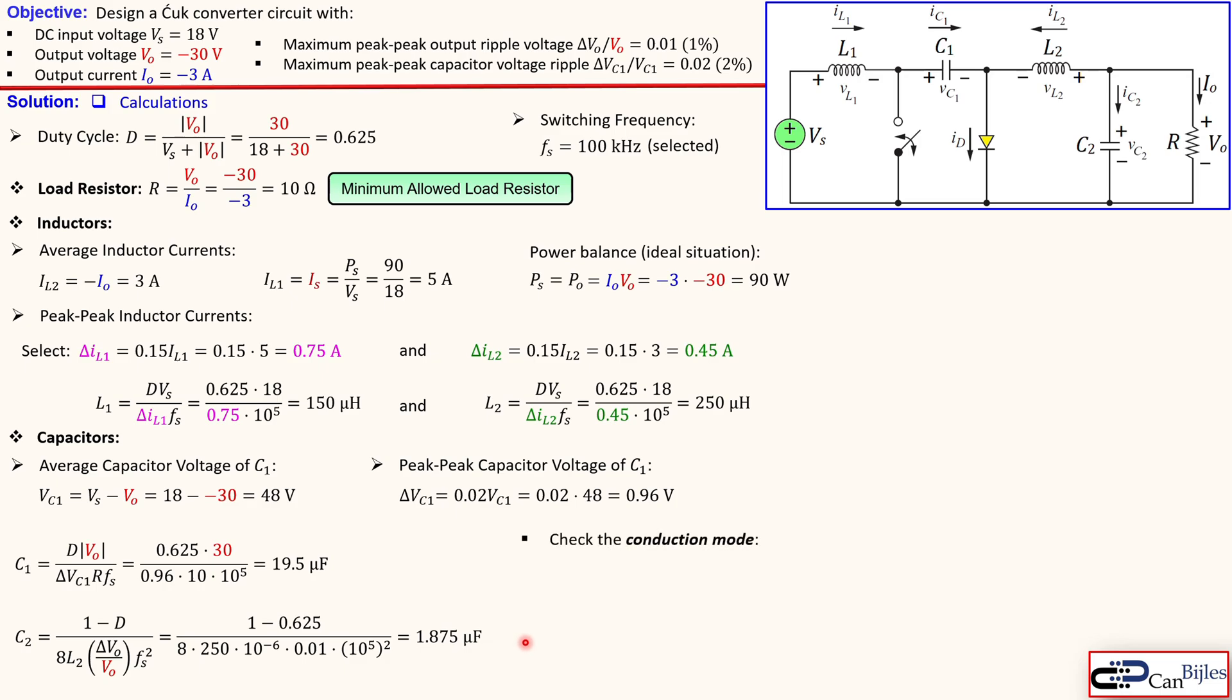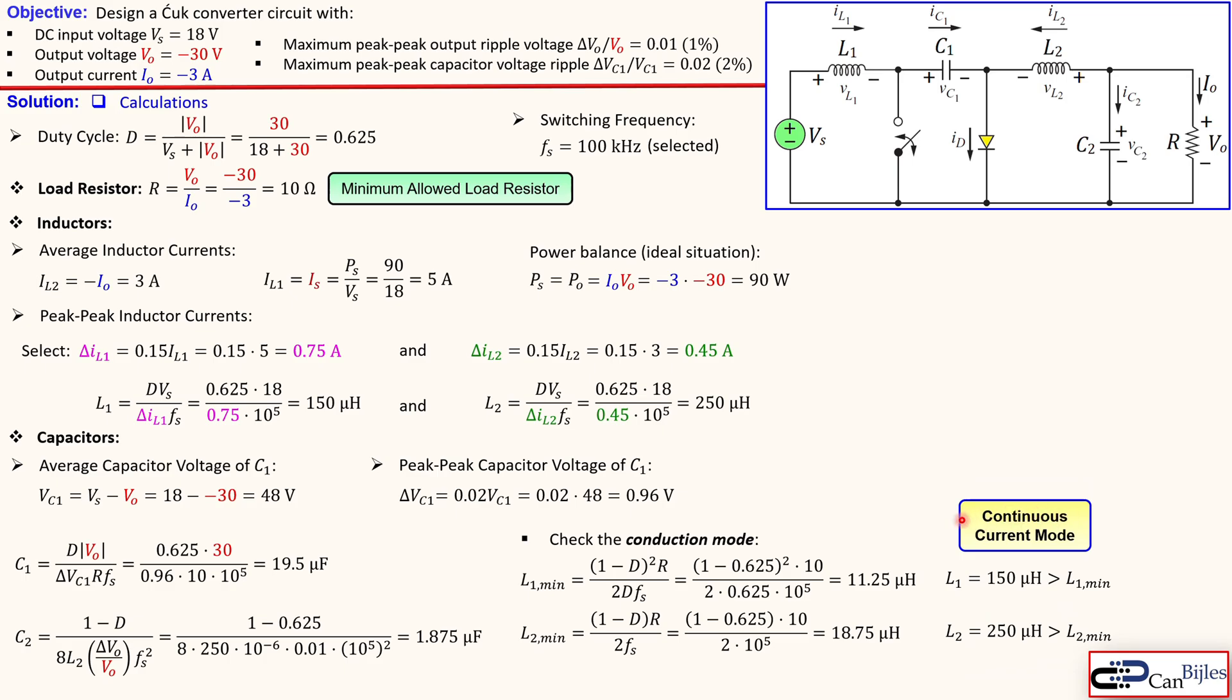Okay, now let's also check the conduction modes because it can be that this system or circuit is operating in the continuous current mode or discontinuous current mode. So for L1, we need to have a minimum value, which is then given by this formula. Now when you substitute here the duty cycle, resistor, and the switching frequency, we get here 11.25 microhenries. Now we have that our L1 is 150 microhenries, so this is definitely larger than that one. So this is fulfilled in order to stay in the continuous current mode. And the L2 minimum is given by this expression for the condition. That will give us, if you substitute the values, 18.75 microhenries. We have L2 as 250 microhenries, so definitely larger than the L2 minimum. So again, looking at these two conditions and also values, we say that this is in the continuous current mode.